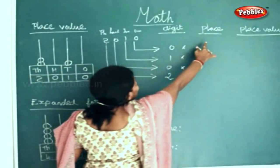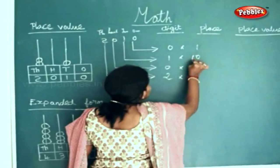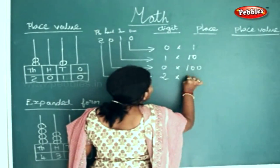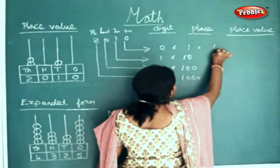Now we will write the place. This is in 1's, 10, 100, and 1000. Zero into any number will be 0.